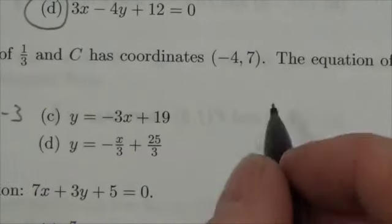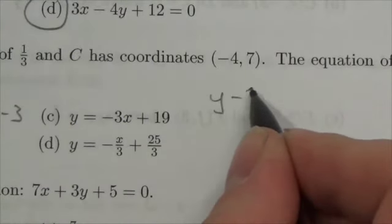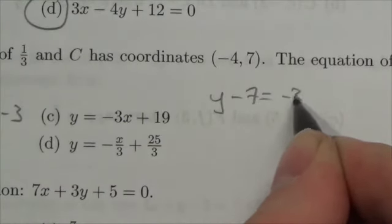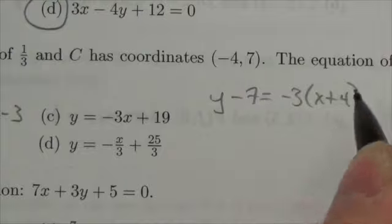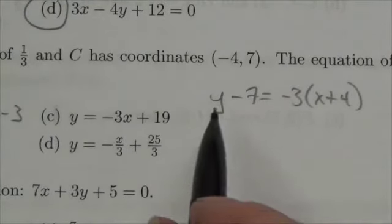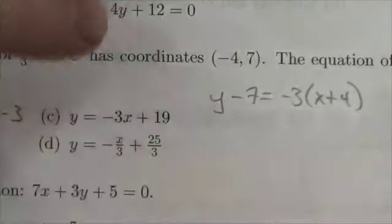But I'll start with point-slope form: y minus 7 equals negative 3 times (x plus 4). I do that because it's an easy equation - boom, I've got it.